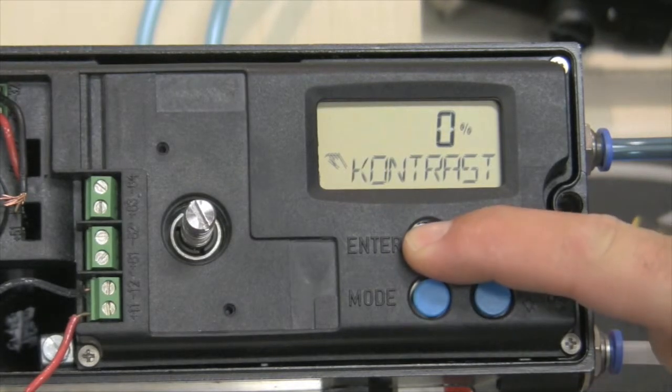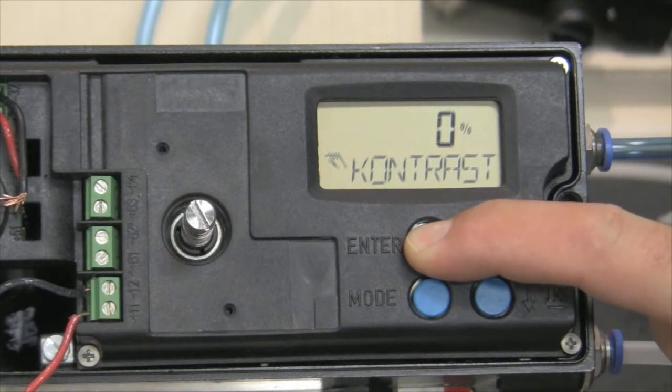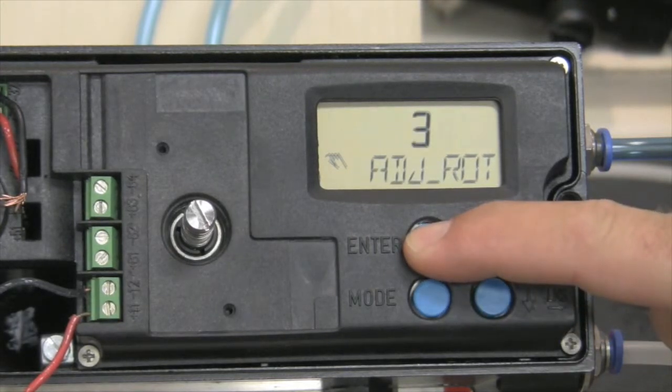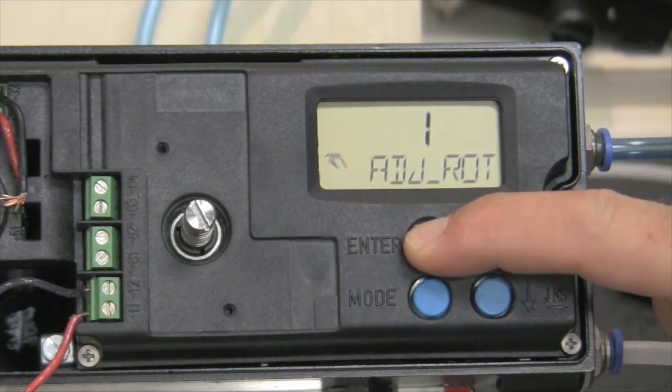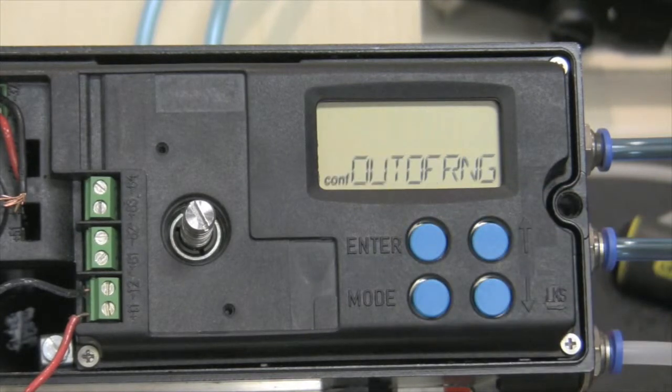So when we try to calibrate this positioner by pressing and holding the enter button, it should very quickly read out of quadrant when it tries to do its calibration.